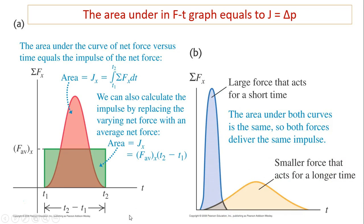This is what we talked about last year — remember the egg drop project? For that contraption, you had to protect the egg by extending the time to reduce the impact force. When you drop an egg from the same height, the impulse is the same regardless. But some eggs break and some do not, because of the force acting on them. You want to extend the time of impact to reduce the force.